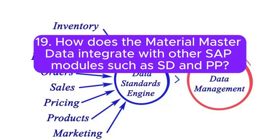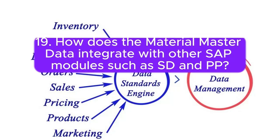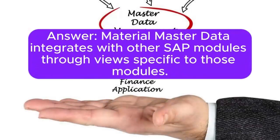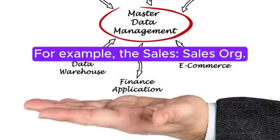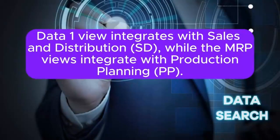Question 19: How does the Material Master data integrate with other SAP modules such as SD and PP? Material Master data integrates with other SAP modules through views specific to those modules. For example, the Sales/Data 1 view integrates with Sales and Distribution (SD), while the MRP views integrate with Production Planning (PP).